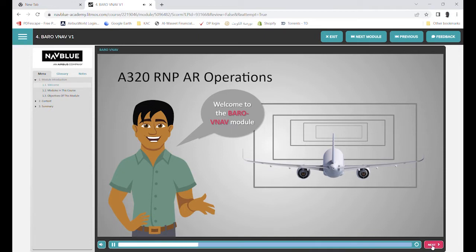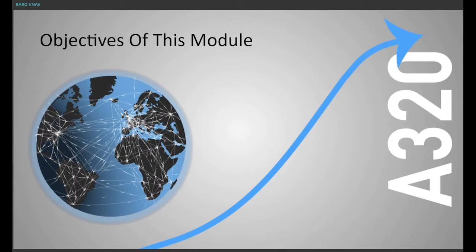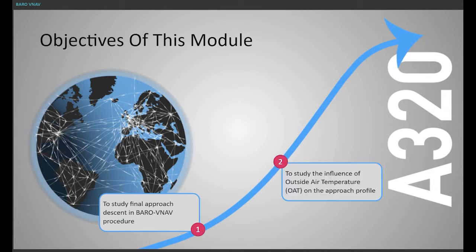We are now at the point where we can study the Barrow VNAV elements of the course. The objectives of this module are to study final approach descent in Barrow VNAV procedure, to study the influence of outside air temperature on the approach profile,